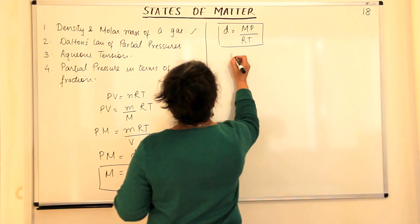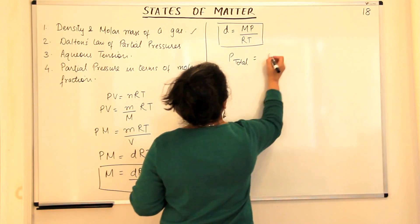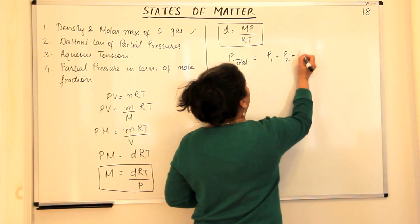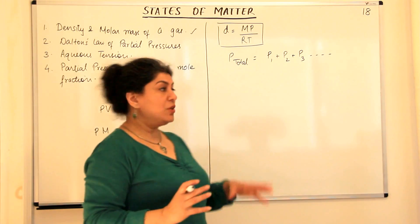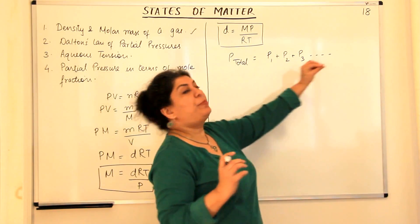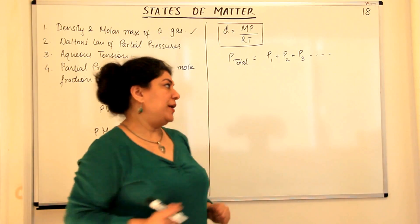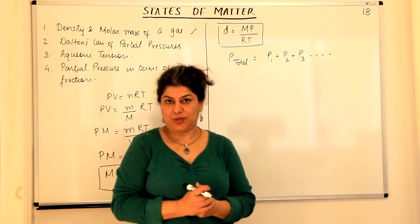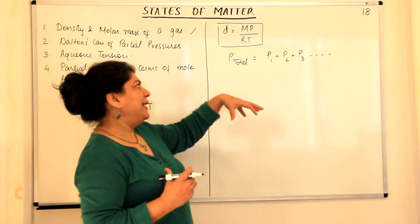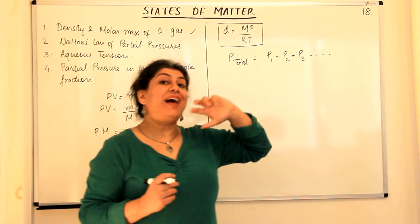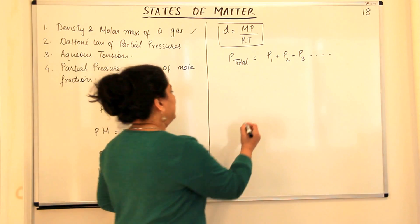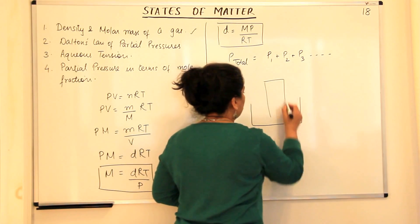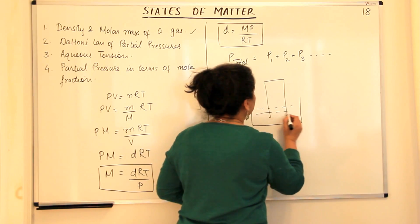So P total equals the partial pressures P1 + P2 + P3 and so on — the sum of the partial pressures of all the gases present in that jar. Now why is this important? When scientists carry out chemical reactions, the gaseous products collected are not the only gases present in the jar. Usually when a reaction takes place in aqueous medium, you have a gas jar inverted and the reaction is taking place inside the liquid.